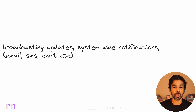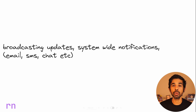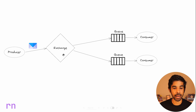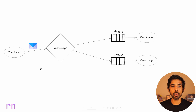Fanout exchanges are great use cases when you want to broadcast updates or publish system-wide notifications. For example, if you want to send a notification to different mechanisms like email, SMS, chat, etc., you can use a fanout exchange. All you need to do is drop in a notification message and have different consumers for each of these mechanisms. When a producer sends a message to a fanout exchange with more than one queue bound to it, the message gets copied into all those queues and each consumer can pick it up and process it in the way that it requires.